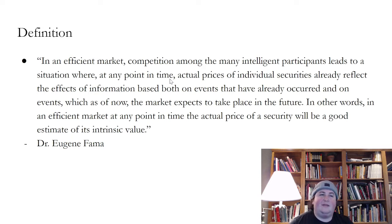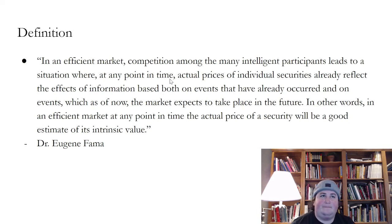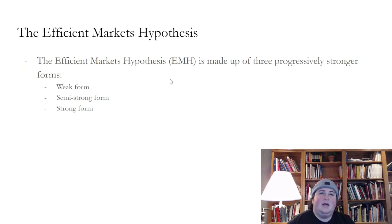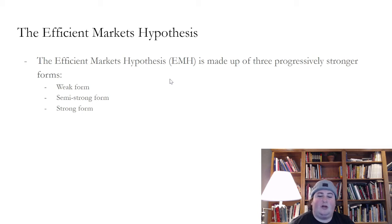The market is factoring in events that have already occurred and those events that the market expects to take place in the future. The efficient markets hypothesis is made up of three progressively stronger forms: the weak form, the semi-strong form, and the strong form.